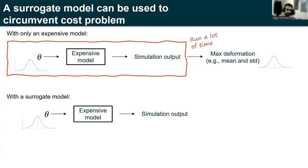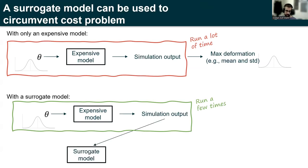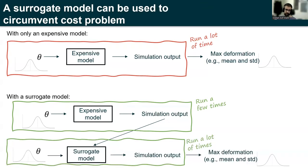So what we can do instead is to leverage a surrogate model. And the way this works is that we still run our expensive model, but we only run it a few times. Then we look at the outputs that we get from those few runs and use them to construct a surrogate model. This surrogate model is then used in place of the expensive model to compute many simulations and then base our estimates for the statistics that we care about on those simulation runs.